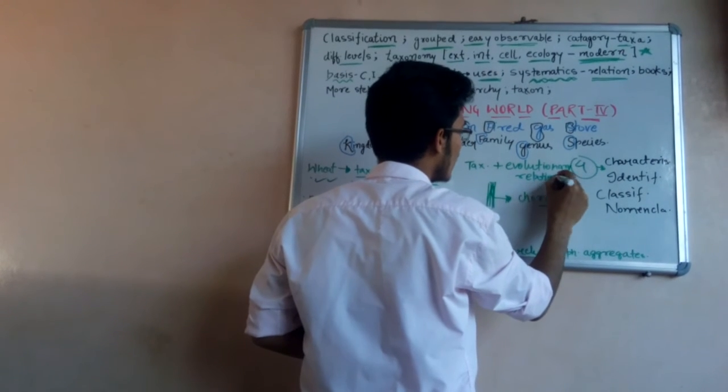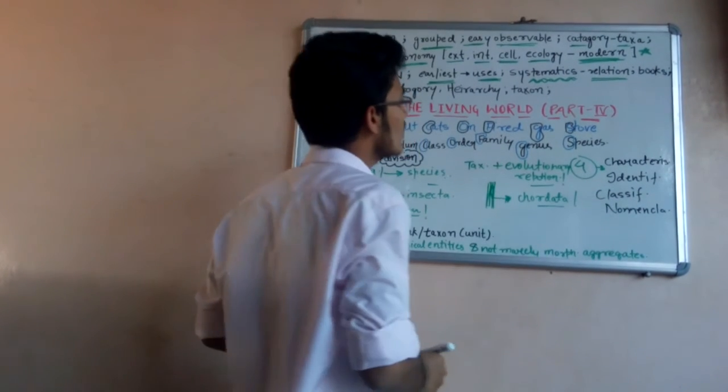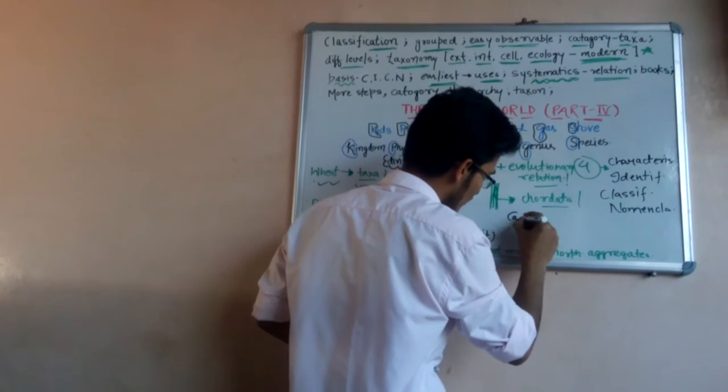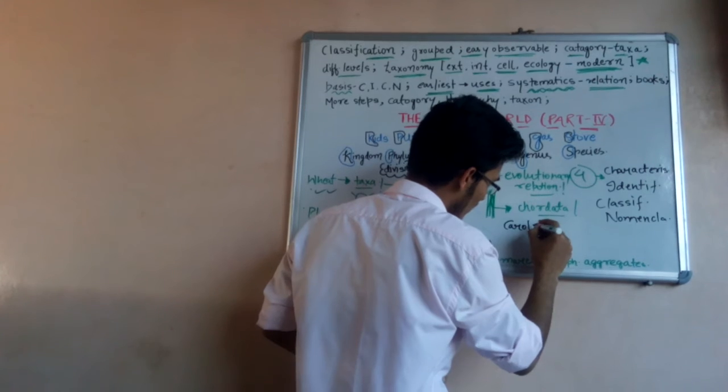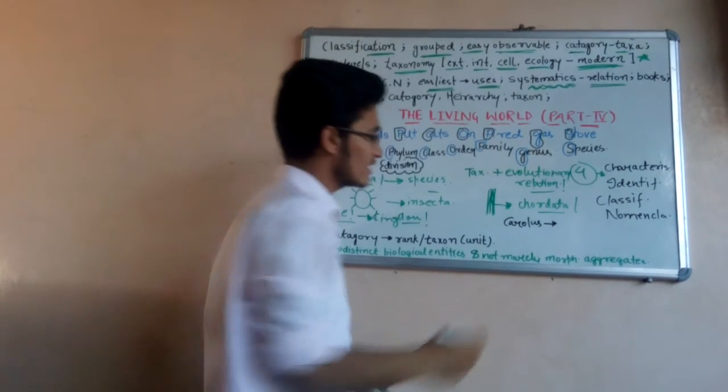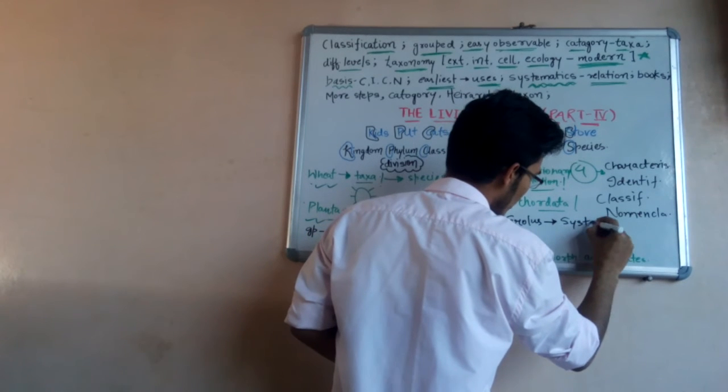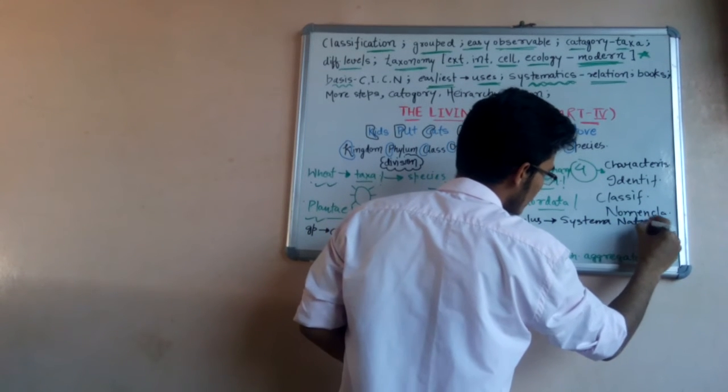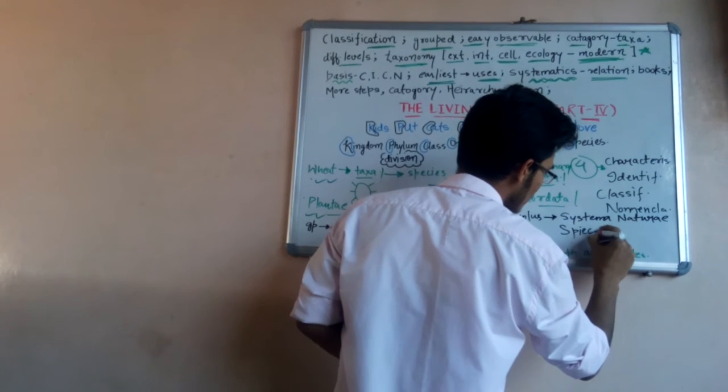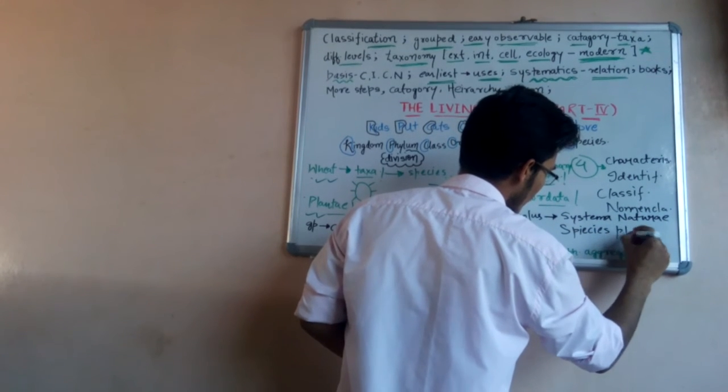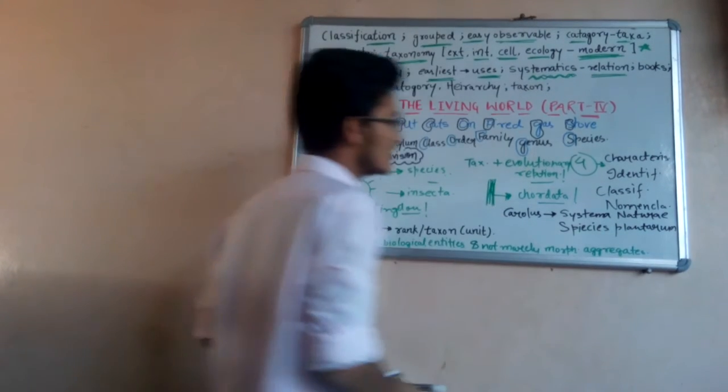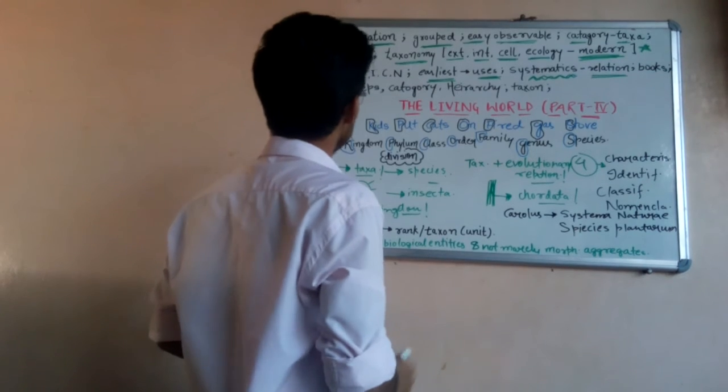Carolus Linnaeus, who has also given the binomial nomenclature which we have already studied in previous lectures, has written some books. These are Systema Naturae and Species Plantarum. These are the tools given in NCERT written by Carolus Linnaeus.